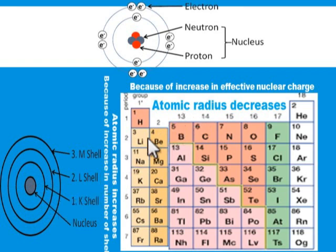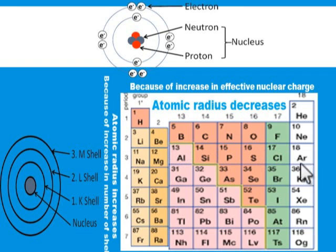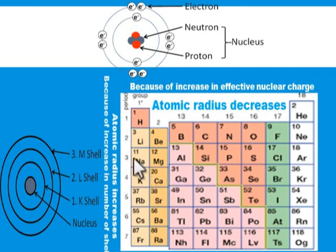Now, back to atomic radius. In the periodic table, as you move from left to right, the atomic radius decreases. Why? In science we need to know why, not just state a fact. The atomic radius decreases from left to right because of an increase in effective nuclear charge.